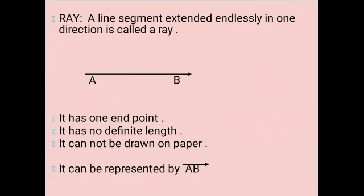Next definition, ray. A line segment extended endlessly in one direction is called a ray. The properties of ray: it has one endpoint, it has no definite length, it cannot be drawn on paper, and it can be represented by AB with the sign of ray.